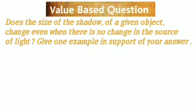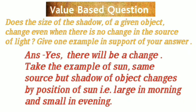Value-based Question 2: Does the size of shadow of given object change even if there is no change in the source of light? Give one example in support of your answer. Answer: Yes, there will be a change. Take the example of sun. Same source but shadow of object changes by position of sun, that is large in morning and small in evening.